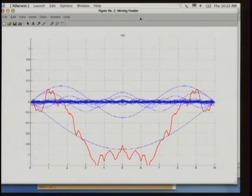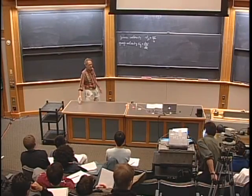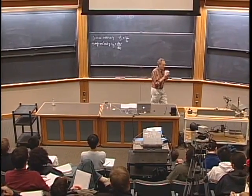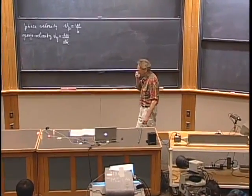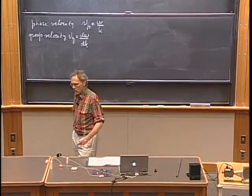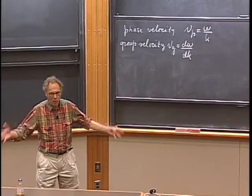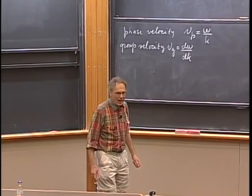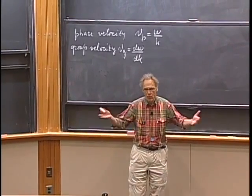We'll take a break and reconvene in five minutes. To summarize: the phase velocity is omega divided by k, and the group velocity is d omega/dk. For a non-dispersive medium neither depends on frequency, but in general you must know the dispersion relation — the omega vs. k curve — to find both velocities at each frequency.